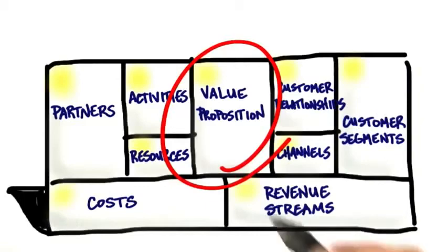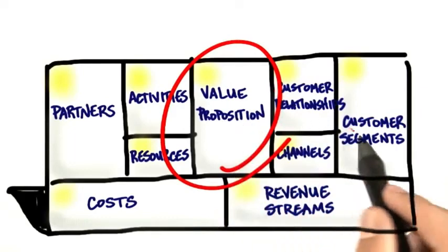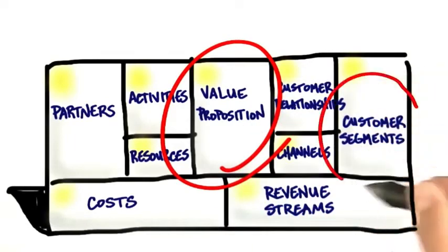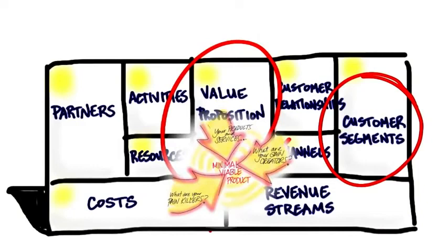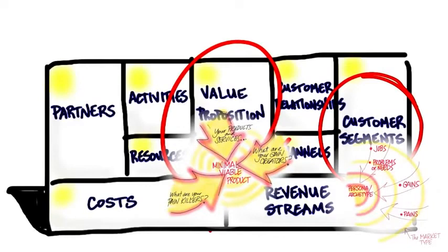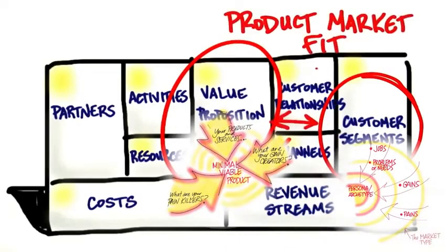As we said, understanding these three components of value proposition work together with understanding the three components of customer segment. In value proposition, the goal is to find out the minimum viable product. In customer segments, the goal is to understand in detail the customer archetype or persona. And this equals product-market fit. The business model canvas is just a start.